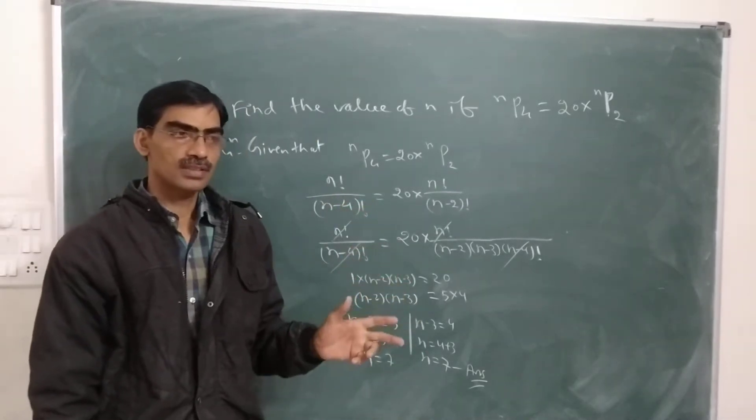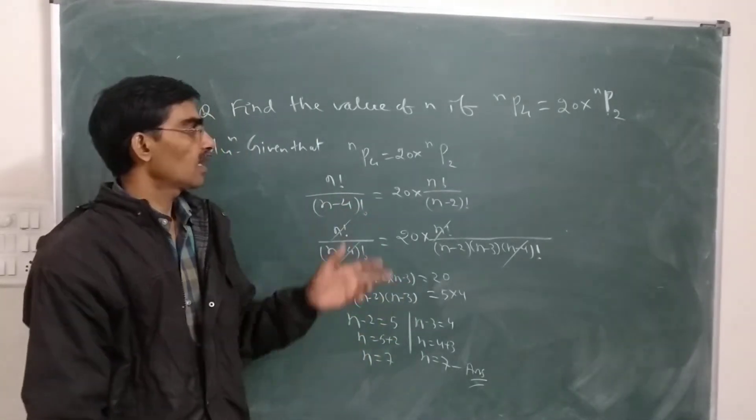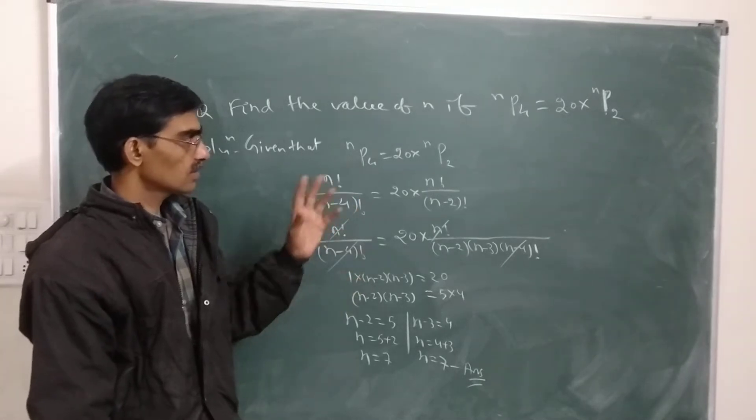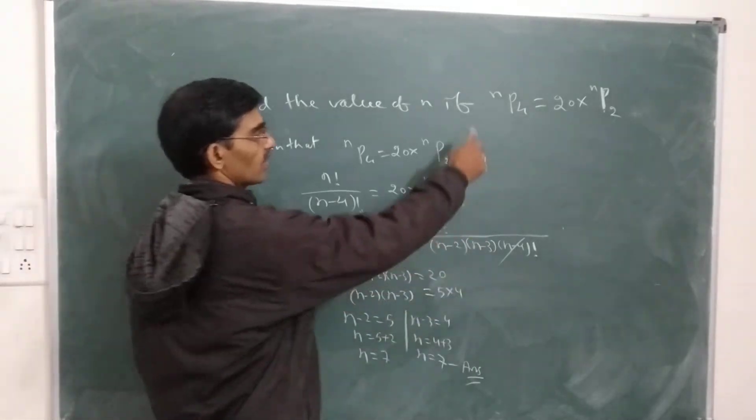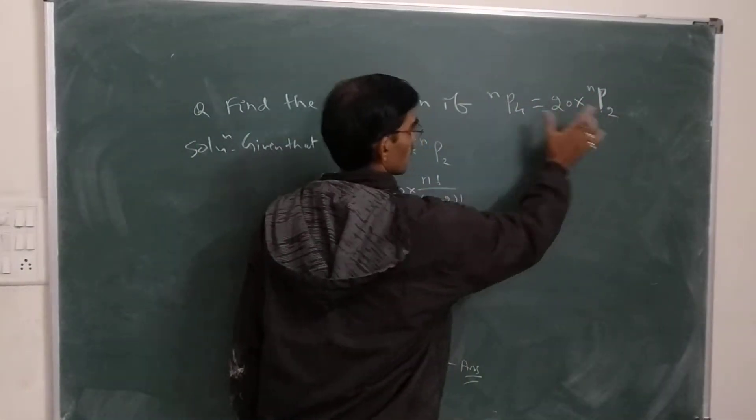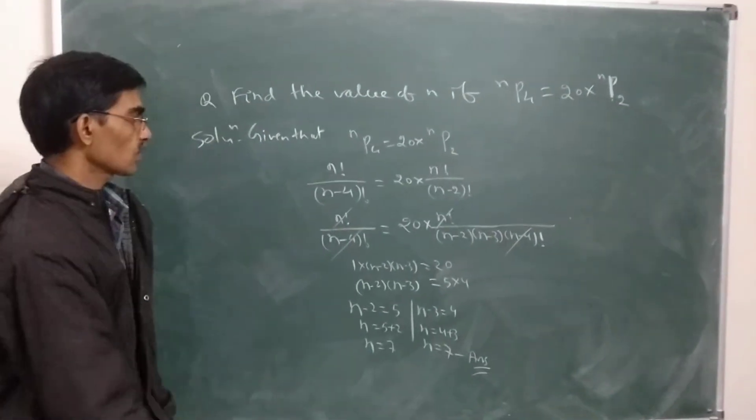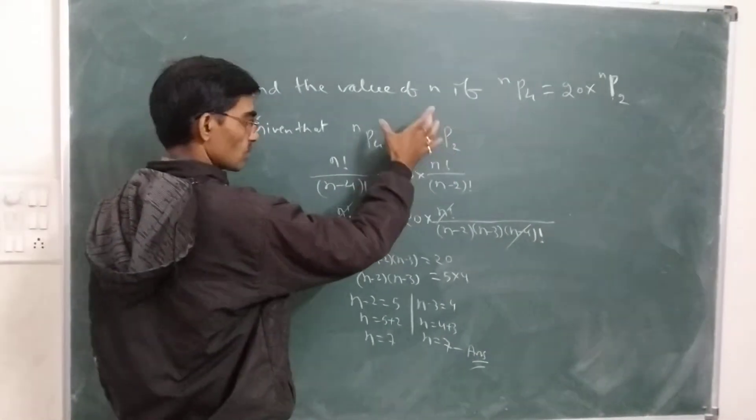These types of questions where we find the value of N or R appear in exams. You're given a condition, and from that condition we need to find the value of N or R. In this question, we need to find N. A numerical value is given here, this complete condition is given. So we'll take the condition and solve it.